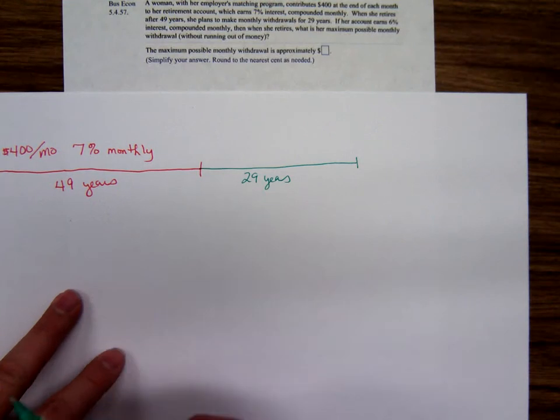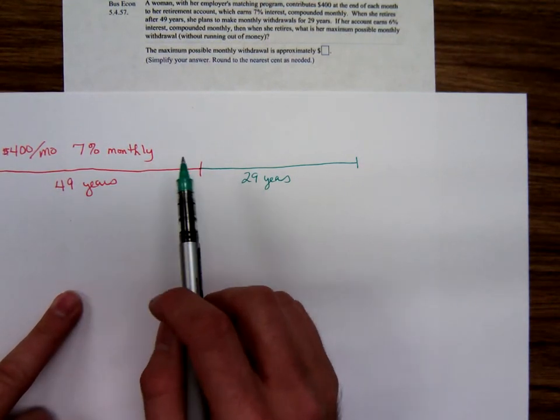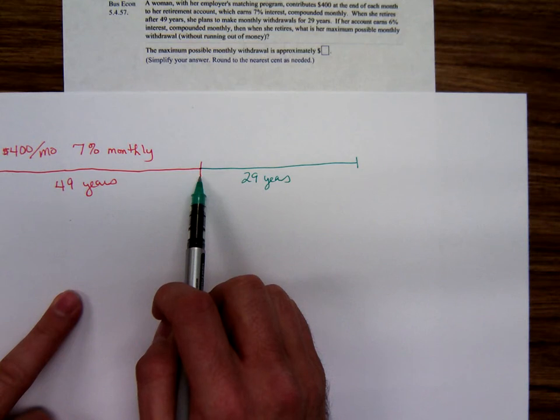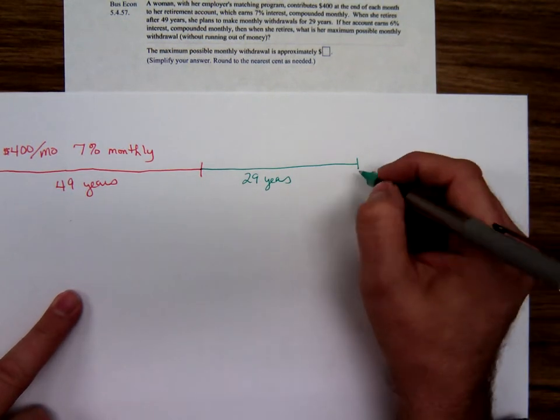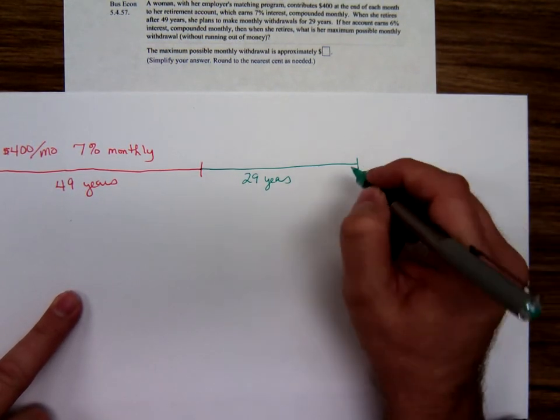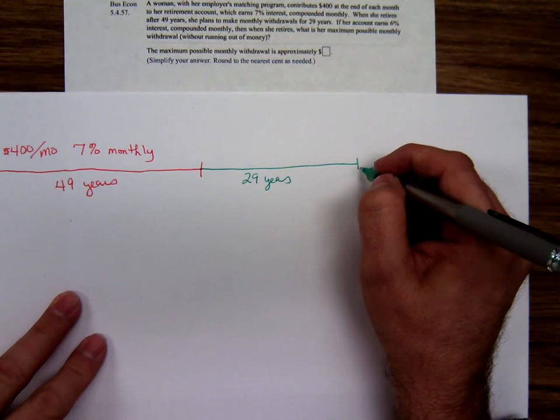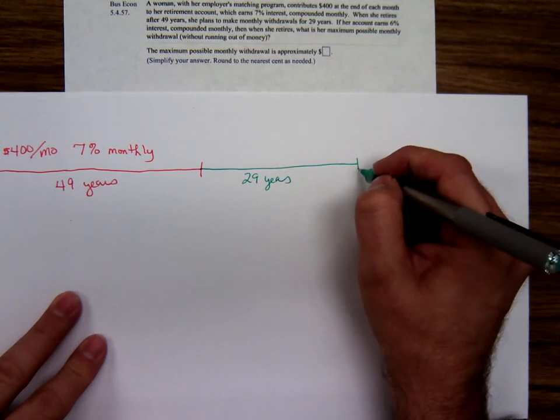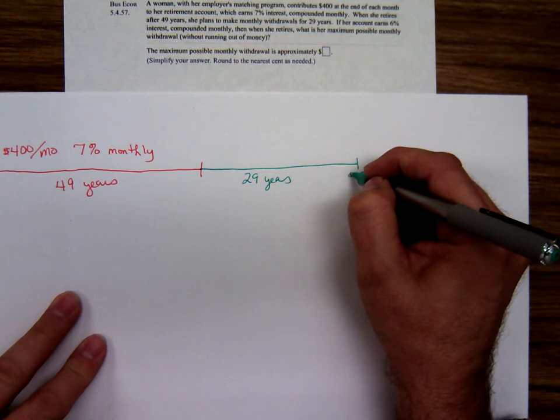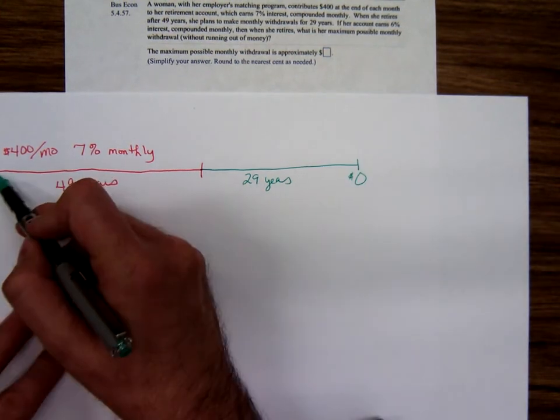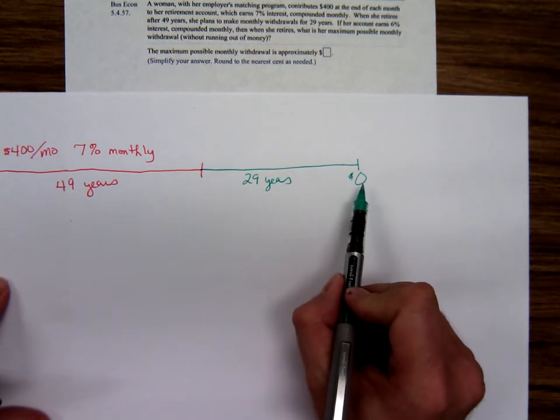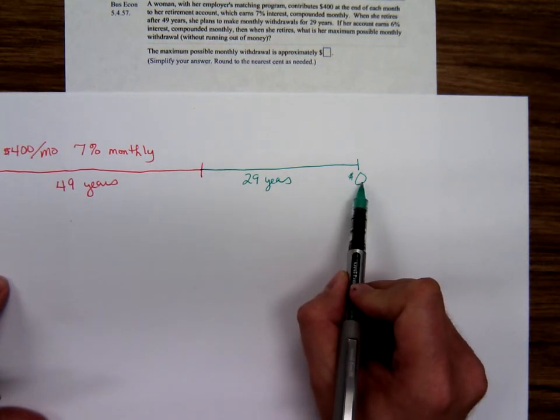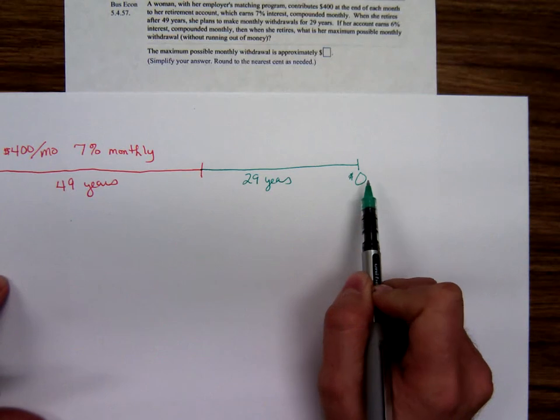After working and saving for 49 years, she's going to retire, live the nice life, and withdraw money. At the end of the 78 years, how much money should she have in this retirement fund? At the end, zero. She started with zero, saved for 49 years, then she starts spending it. And at the end of the 78 years, she's got zero dollars.